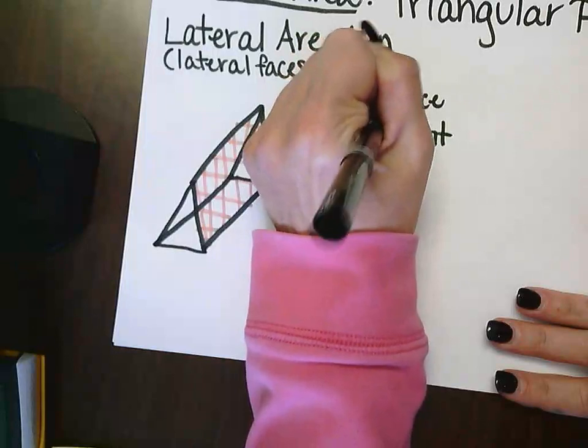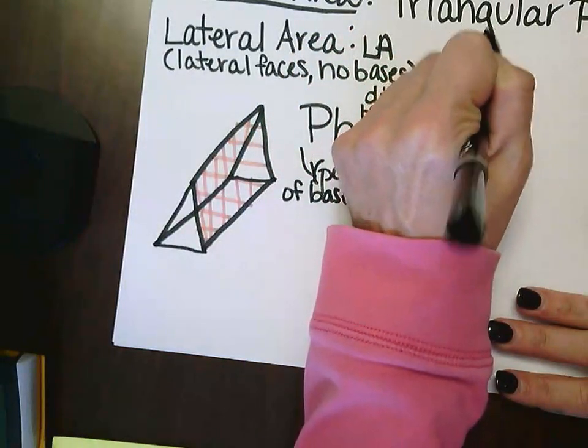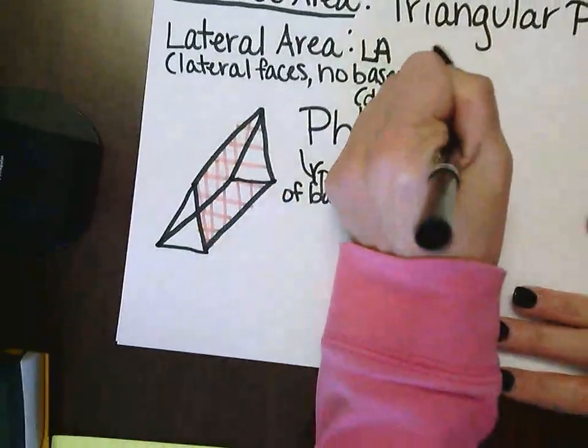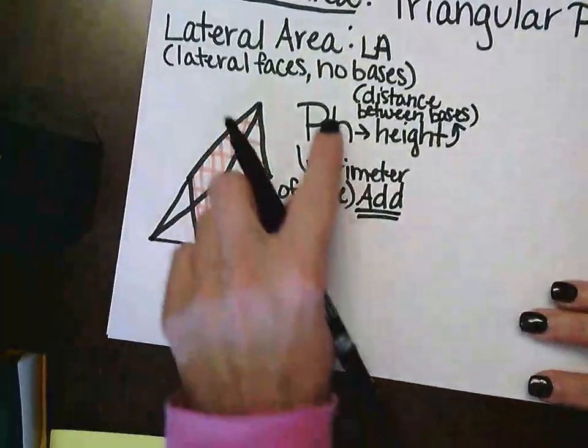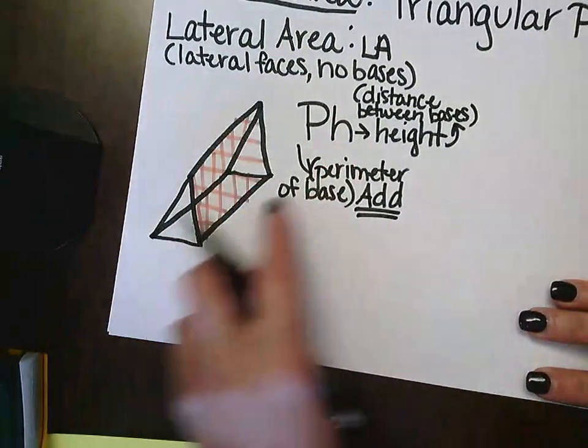H is height. It is the distance between bases. That's my hint right there.